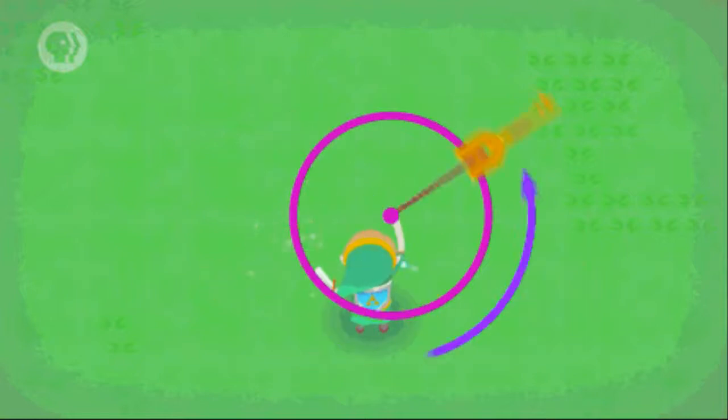For example, if you tie a stone to a piece of string and start swinging it around, the stone moves in a circular path around your body. This type of motion is known as circular motion.